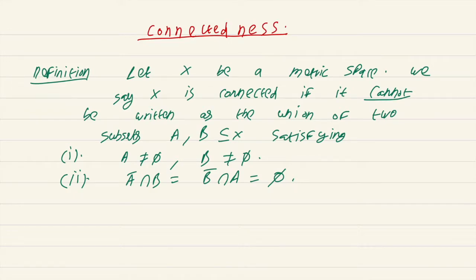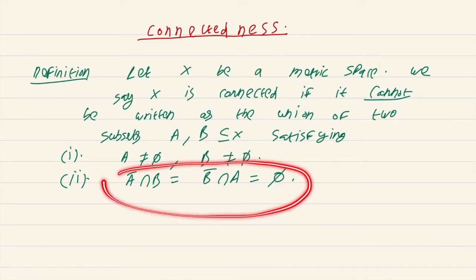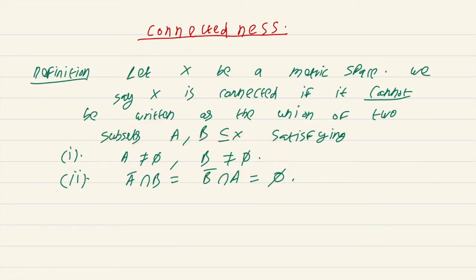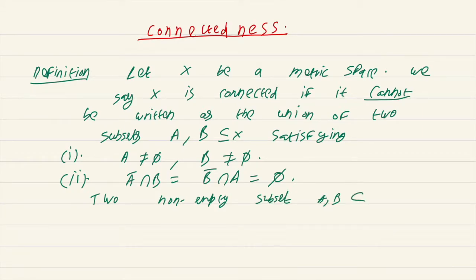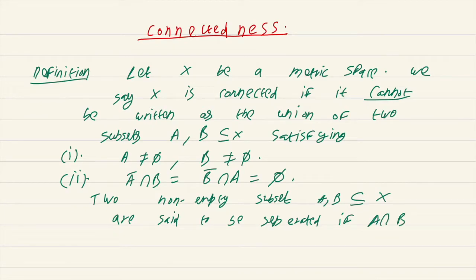A set is said to be connected if you cannot write it as the union of two pieces that are not just disjoint, but essentially disjoint — that is what the condition A-closure intersect B and B-closure intersect A equal to empty is saying. Of course, neither of these sets should be empty. Two non-empty subsets A, B of x are said to be separated if A intersection B-closure equals A-closure intersect B equals the empty set.